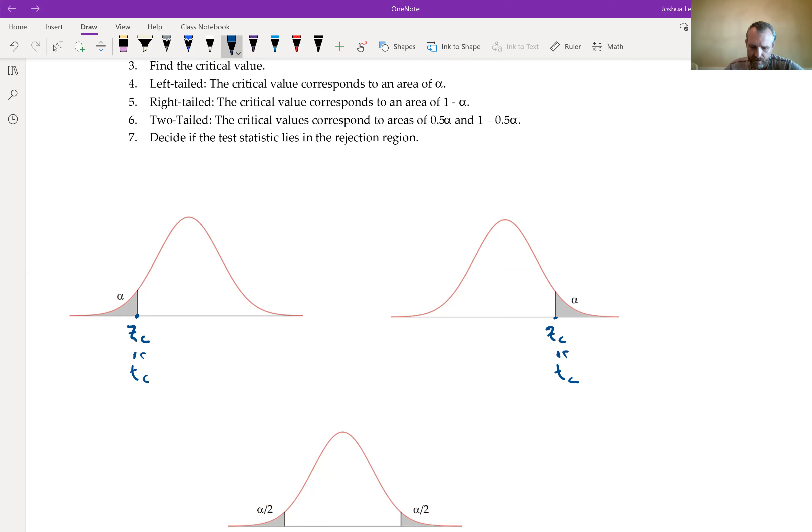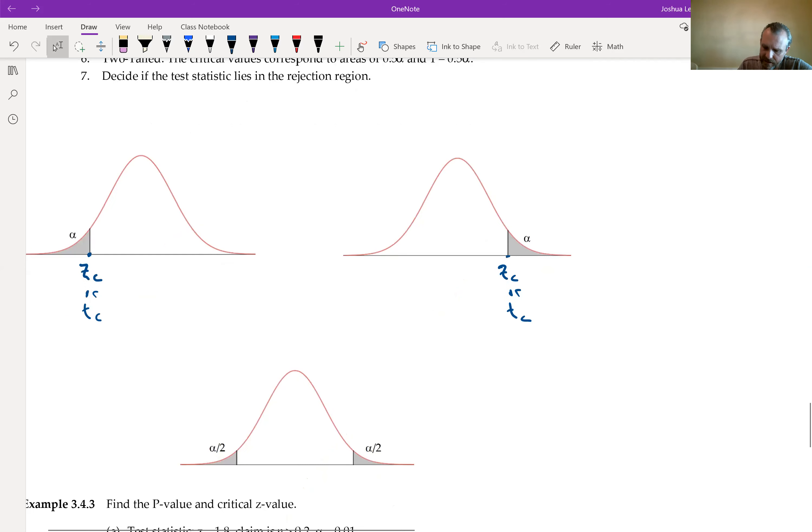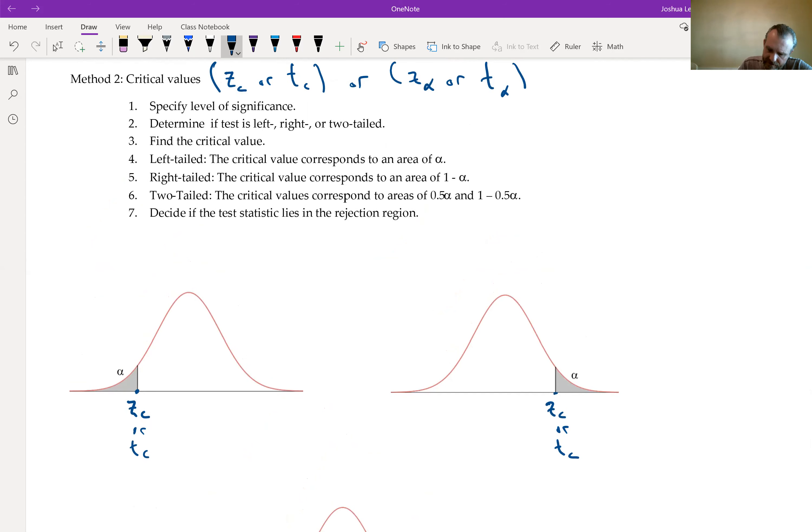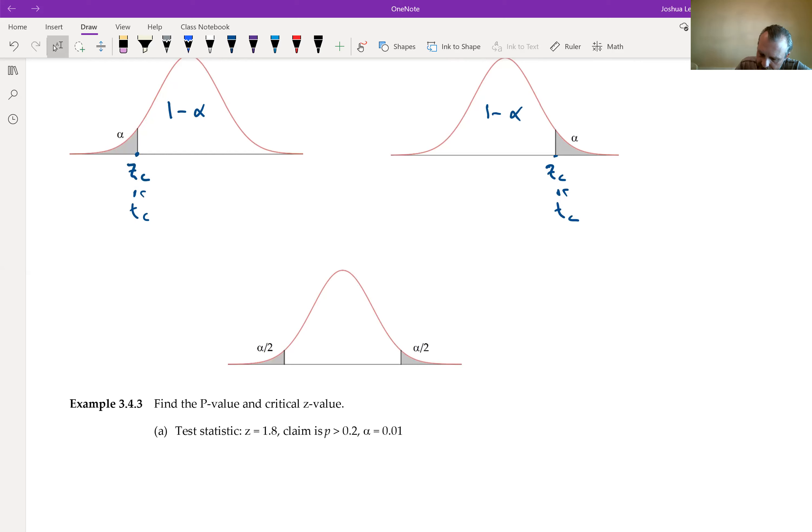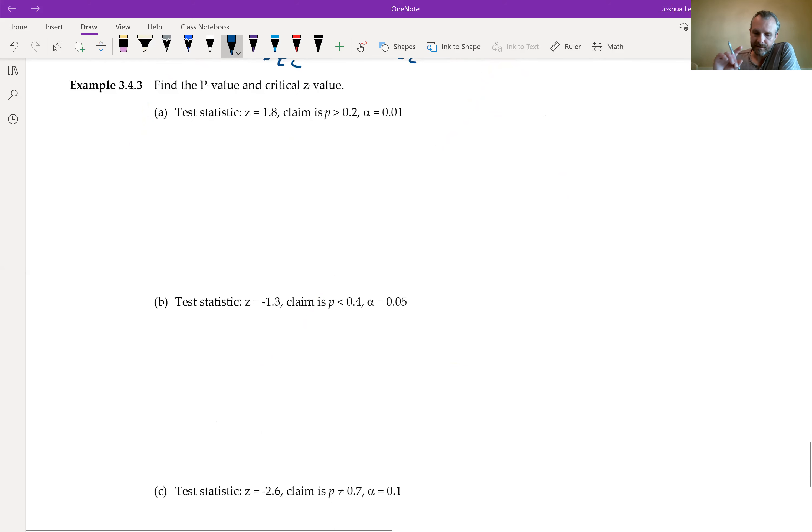The second method is known as critical values. When I say critical values, because of the test that we're going to do - we're going to be testing for proportions or means - my critical values will essentially be a Z_c for critical or a T_c. You might also see this as Z_alpha, T_alpha, or T_alpha over 2, Z_alpha over 2, depending on if it's two-tailed or not. I like using critical; that's my habit.